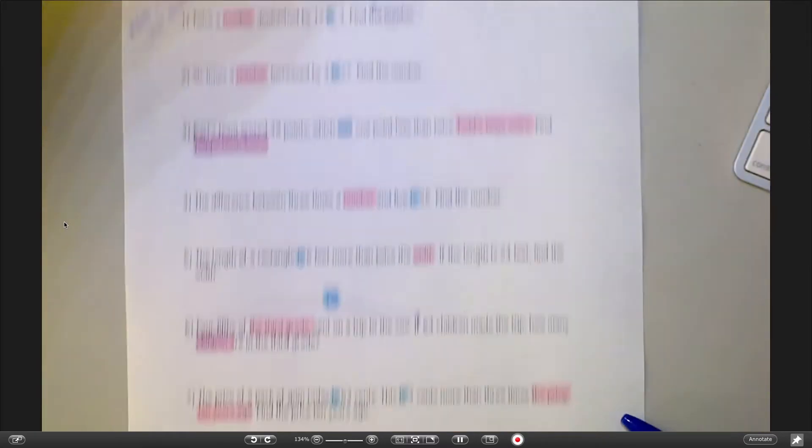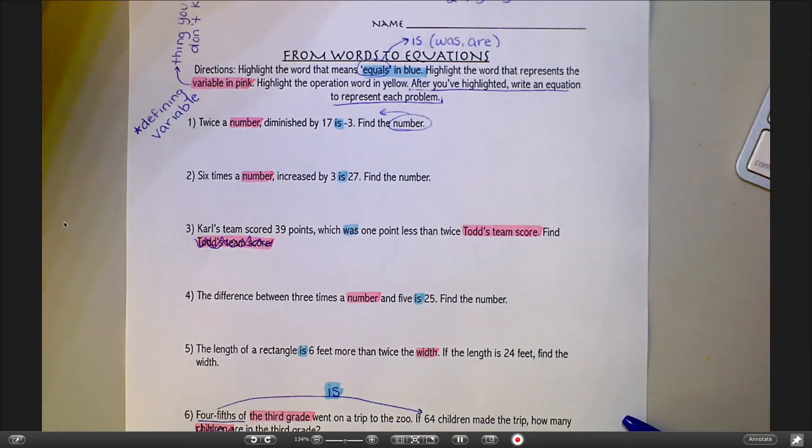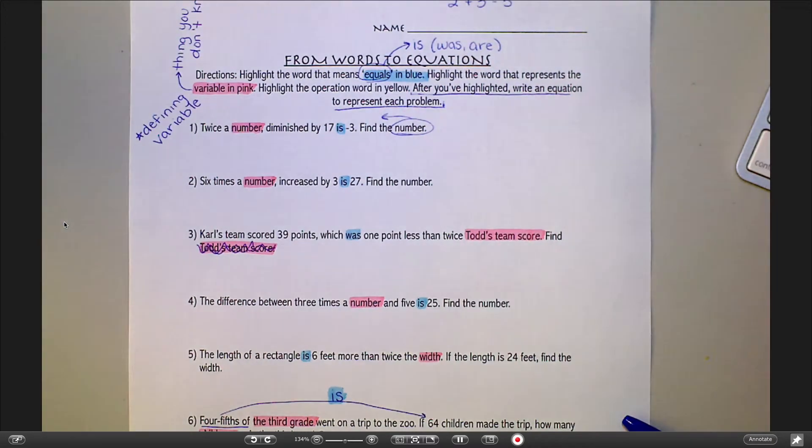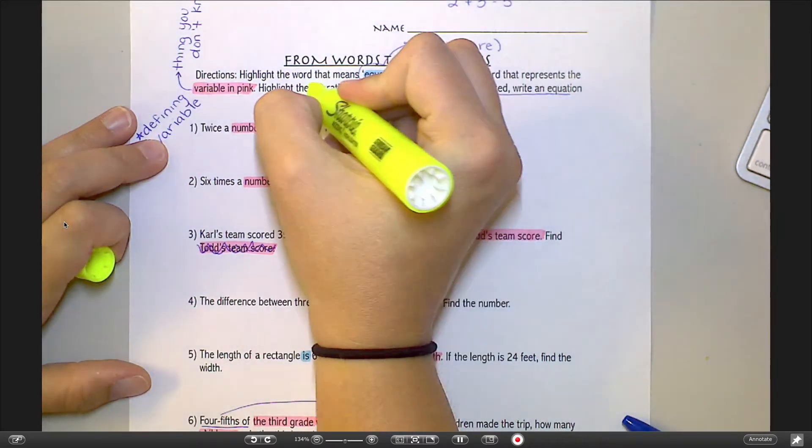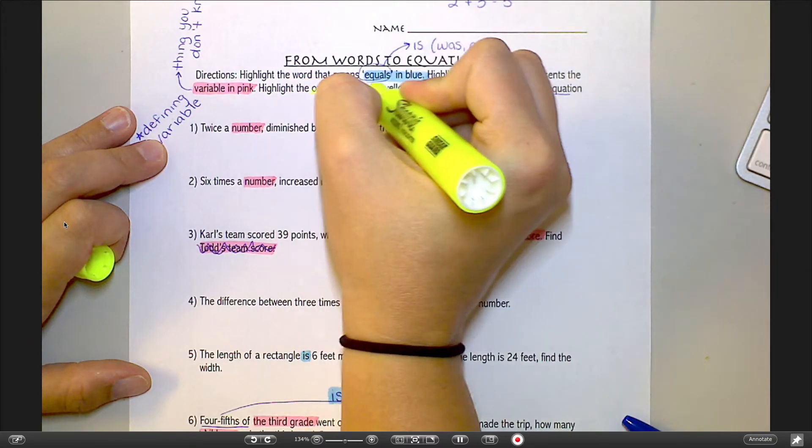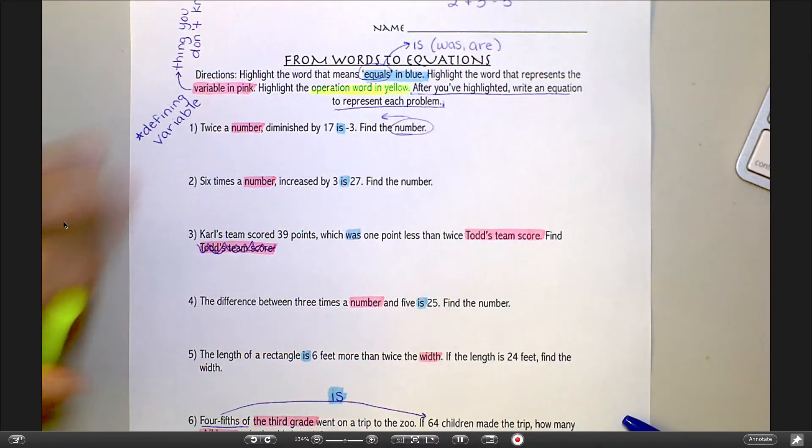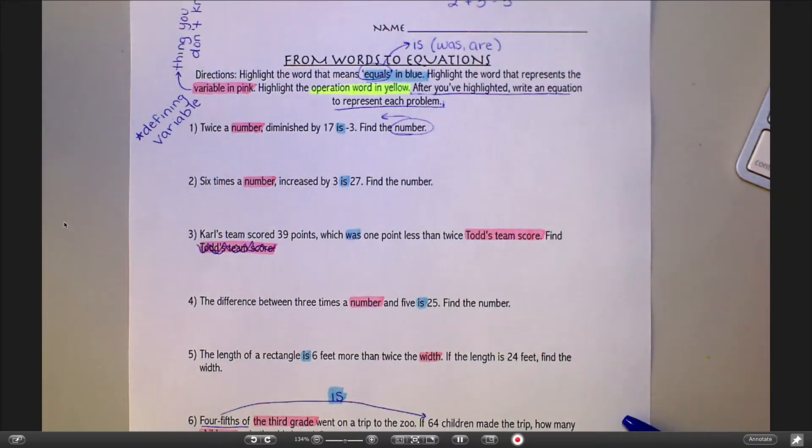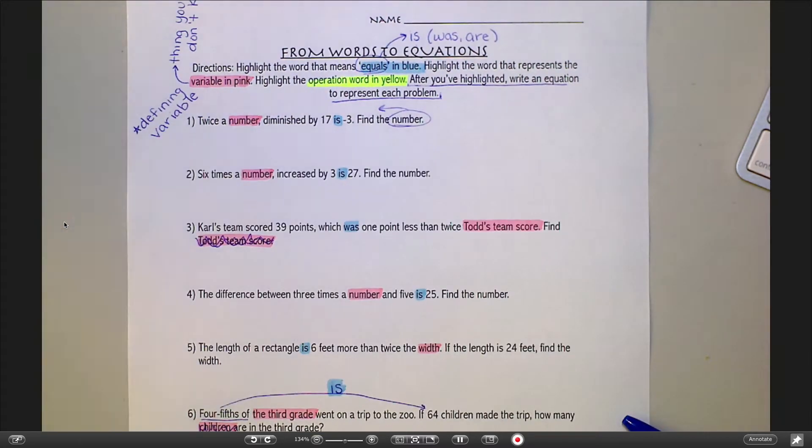The last little thing we're going to highlight today is the operation word. Operation words, when I say what is the operation word, I want to know what are the words that tell you something to do mathematically. So they tell you to add, they tell you to subtract, they tell you to multiply, they tell you to divide. It's words that tell you how to put things together. And hopefully that's what you came up with when you did your chart together with your group.